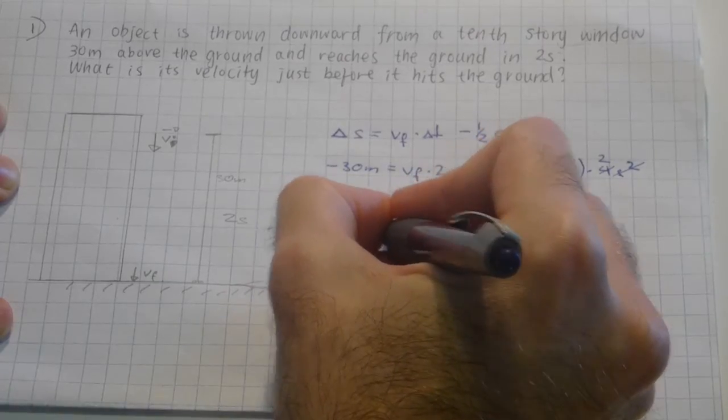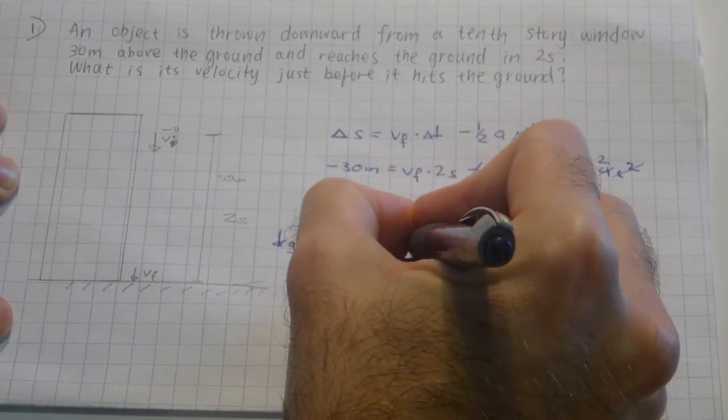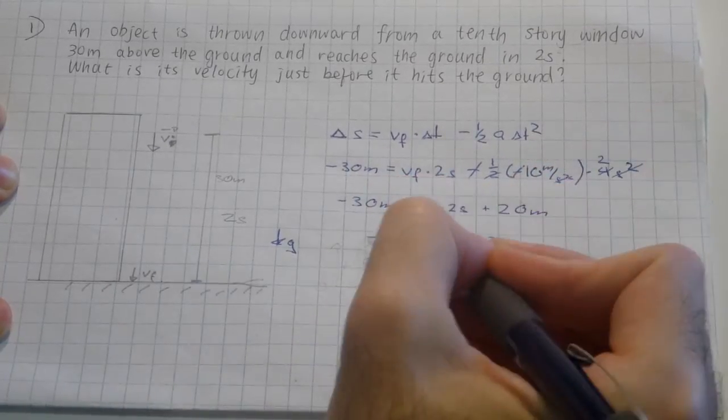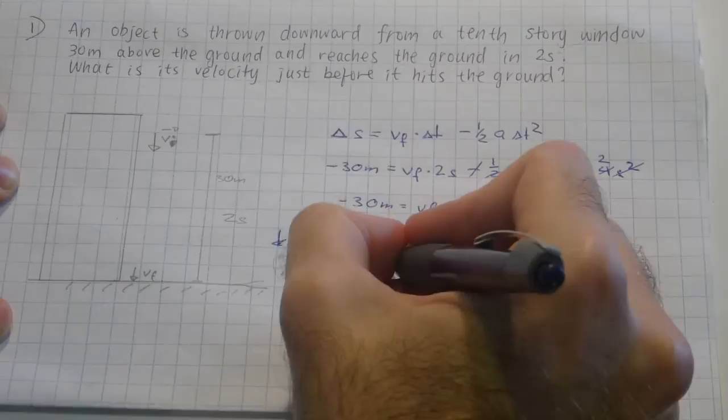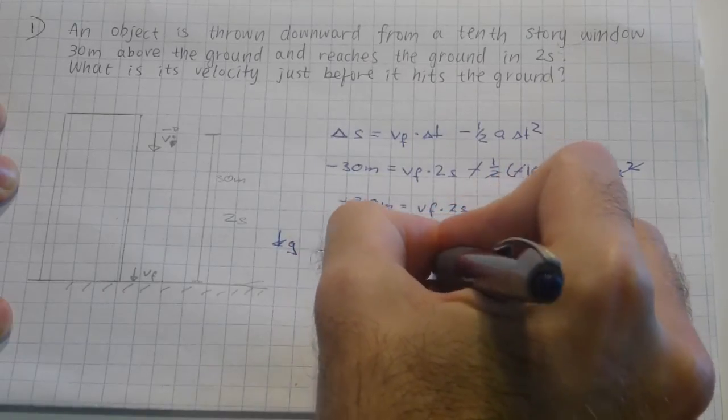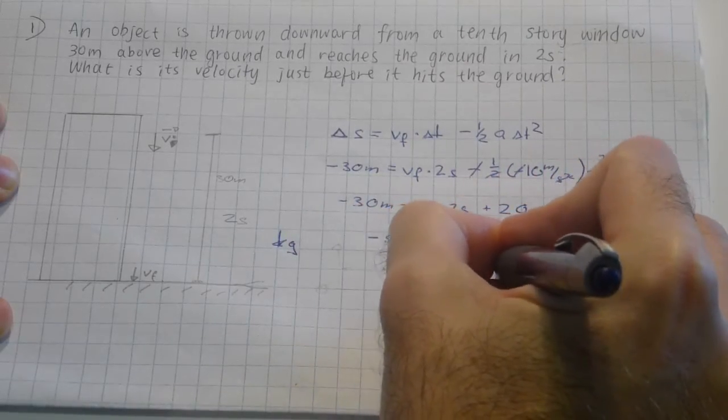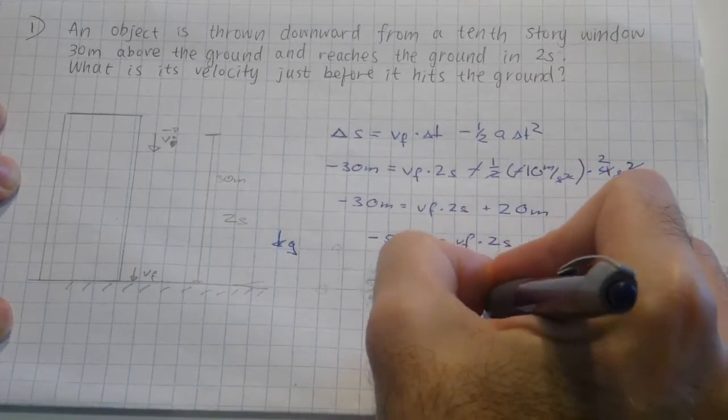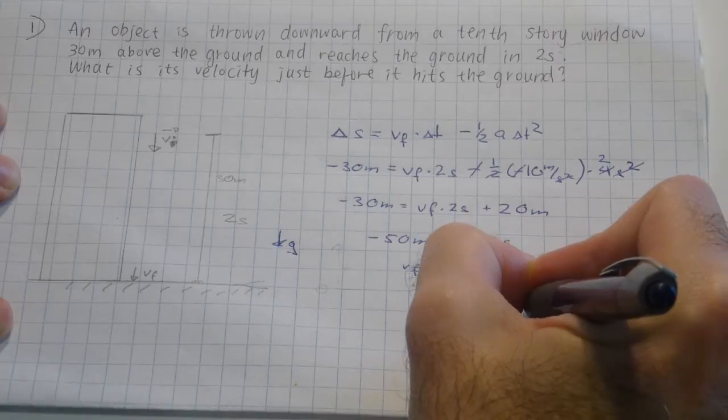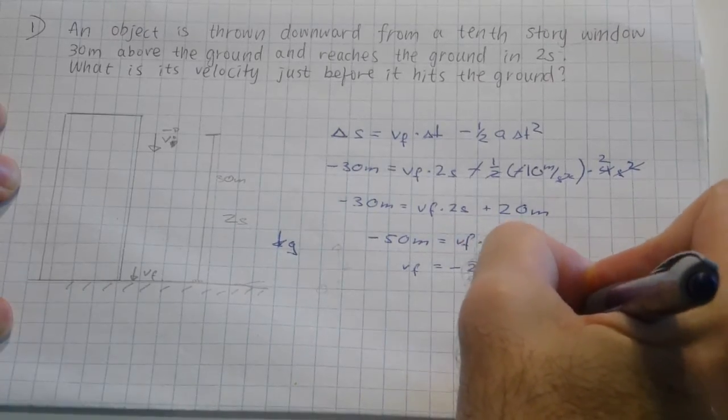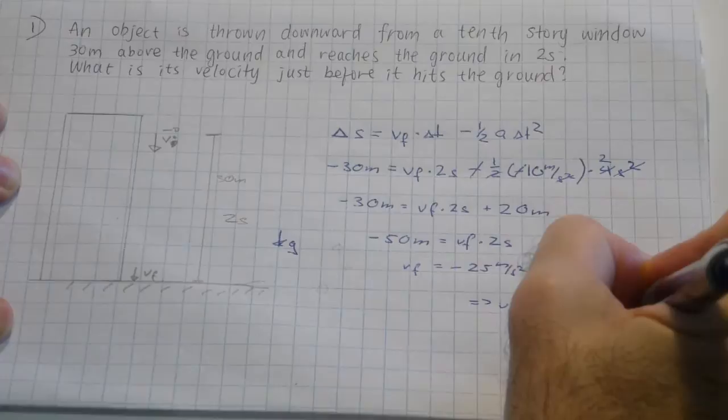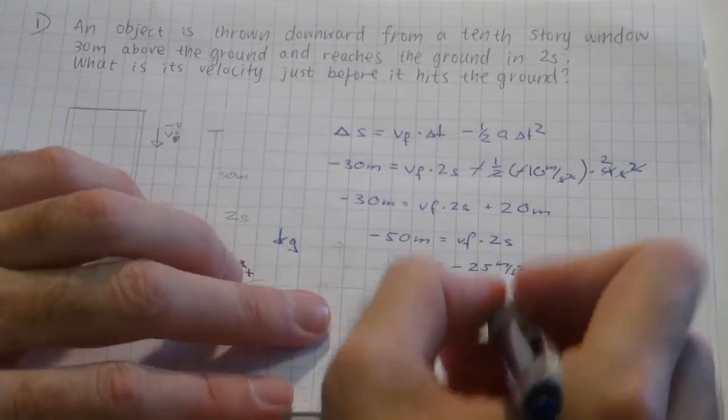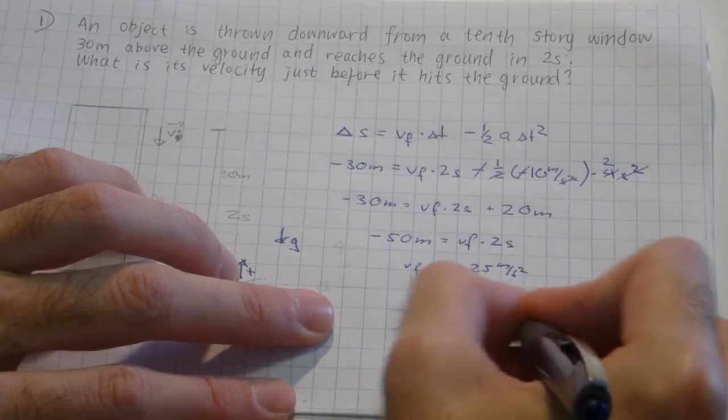I get minus 50 meters equals v-final times 2 seconds. I divide by 2 seconds and I get v-final is minus 25 meters per second. This means the final velocity is 25 meters per second downward, as I have declared upwards being positive. This would be the solution.